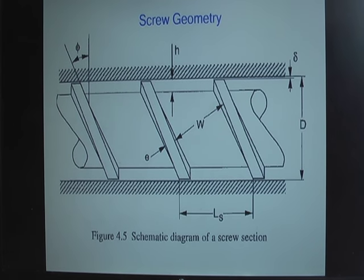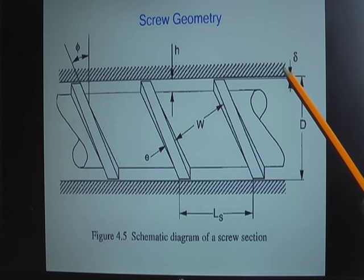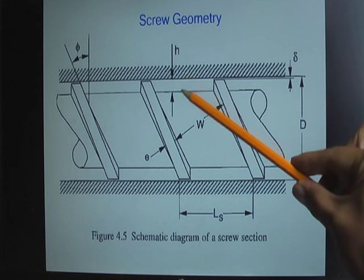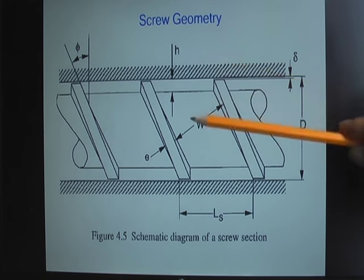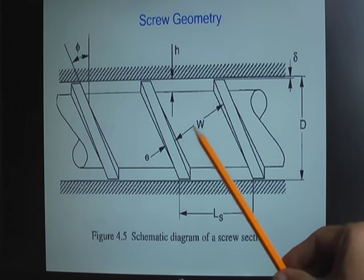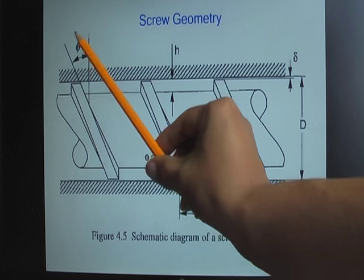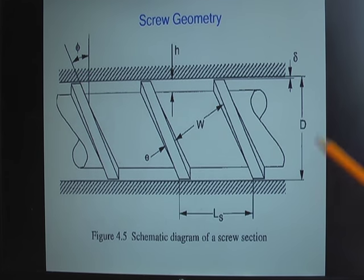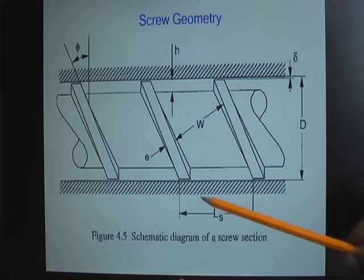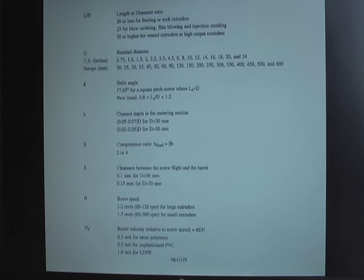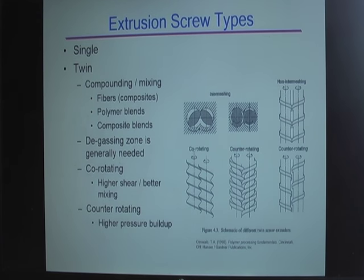This is the screw geometry, and there are a few important parameters to know. First is the clearance — the small gap between the barrel and the screw flight. Second is the channel depth, which tells you the height of your material particularly in the pumping zone. There is also the distance between screws, the width of the screws, and the helix angle — generally about 17 degrees. The L/D ratio refers to the length between screws divided by the screw diameter.